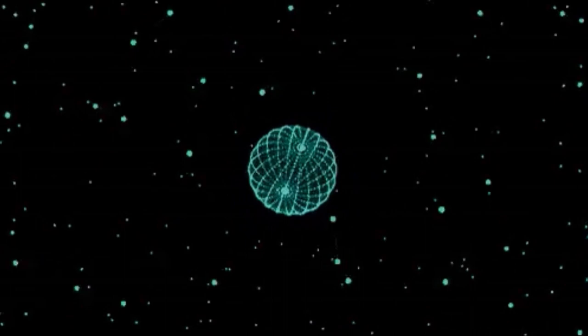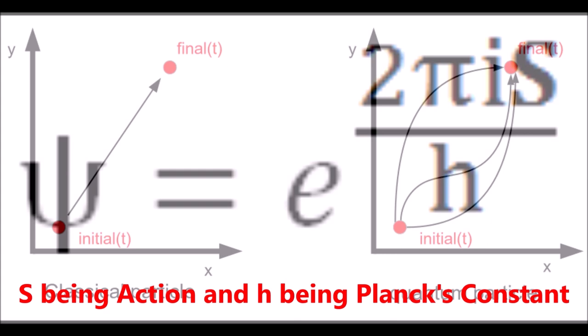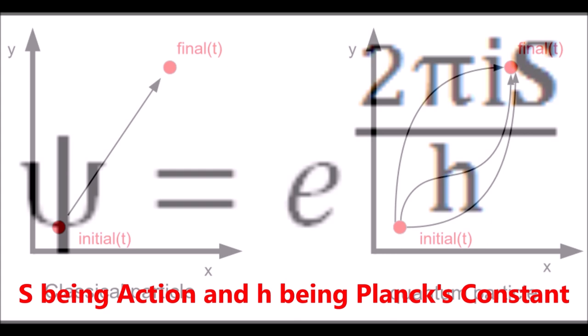The correspondence principle states that classical mechanics is merely the classical limit of quantum mechanics, specifically in the limit as the ratio of Planck's constant to the action of the system tends to zero.